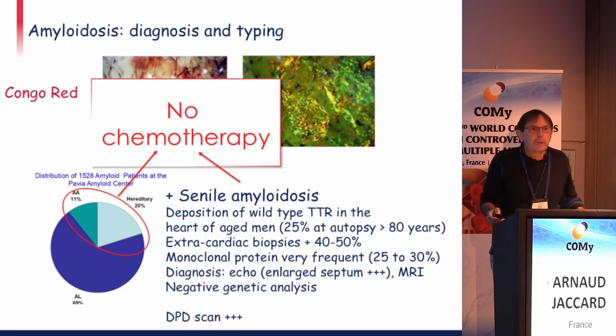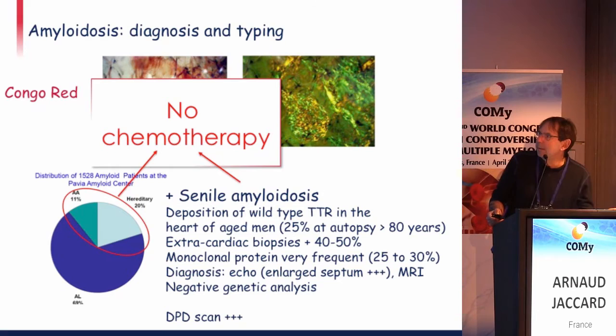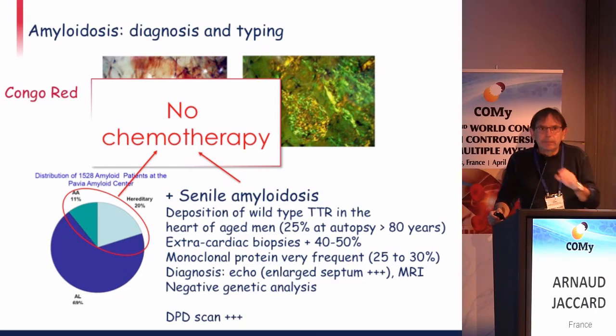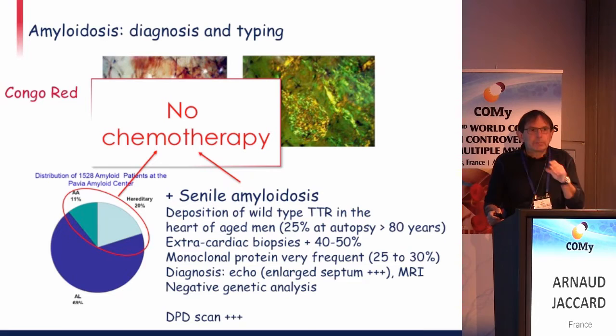You have to diagnose amyloidosis using Congo red with, if possible, a non-invasive biopsy. However, one third of patients don't have AL amyloidosis. In 11 percent of cases in Italy — and I think similarly in other developed countries — the problem is diagnosing hereditary forms.